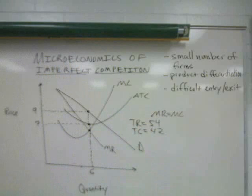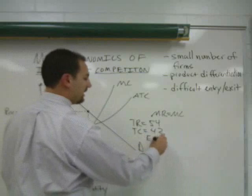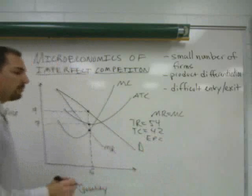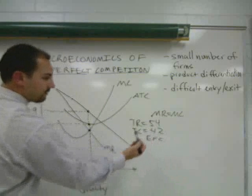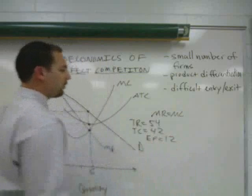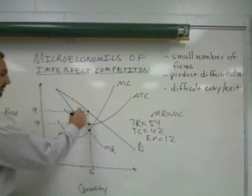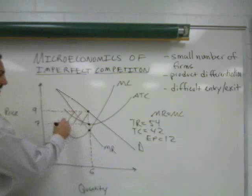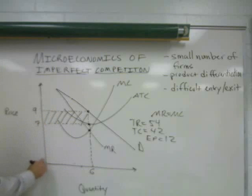So is this firm earning economic profits? The answer is yes. The amount is total revenue minus total cost — $54 minus $42 — which is $12 of economic profit. That economic profit is represented by the rectangle shown here on the graph.